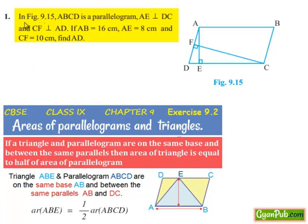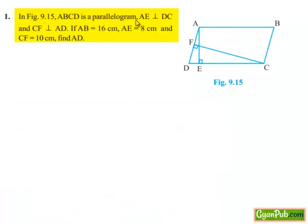Coming to the first question. In figure 9.15, ABCD is a parallelogram with AE perpendicular to DC and CF perpendicular to AD. If AB is equal to 16 cm, AE is equal to 8 cm and CF is equal to 10 cm, find AD.